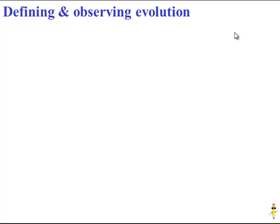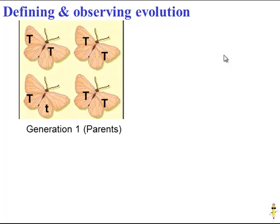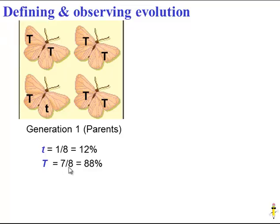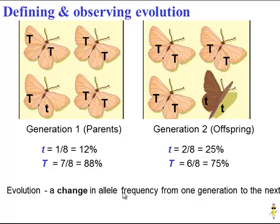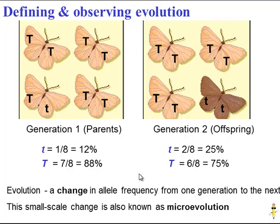If we can observe allele frequencies in a population, we can observe evolution, because evolution at its smallest scale is a change in allele frequencies. In this population of butterflies, the recessive allele frequency starts at 1 out of 8, but in the offspring it changes to 25%. This is evolution — a change in allele frequency from one generation to the next. This kind of small-scale change is sometimes called microevolution.